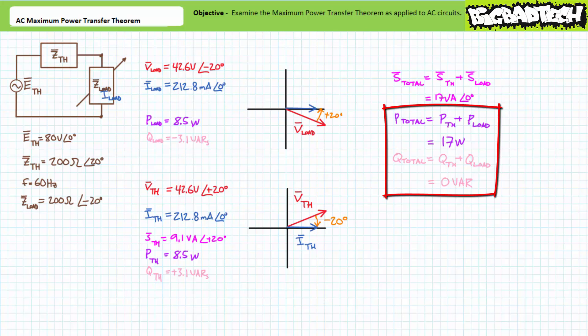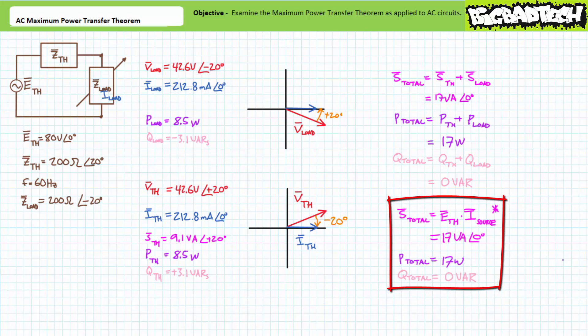Is it really zero VARs? No — at maximum power conditions, the equal and opposite reactive elements cancel each other out. One can also directly solve for total apparent, real, and reactive power using the AC power formula applied to the complete circuit: apparent power is the complex conjugate of the Thevenin's equivalent voltage times source current, yielding 17 volt-amperes at an angle of zero degrees. Resolving into components gives total real power of 17 watts and total reactive power of zero VARs, verifying our earlier calculations.